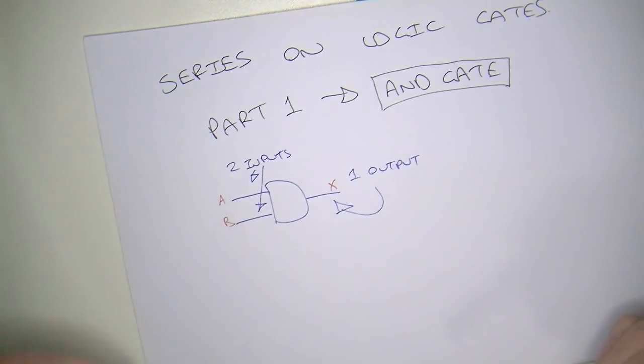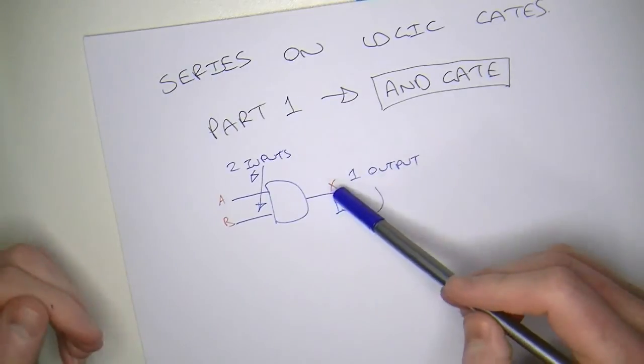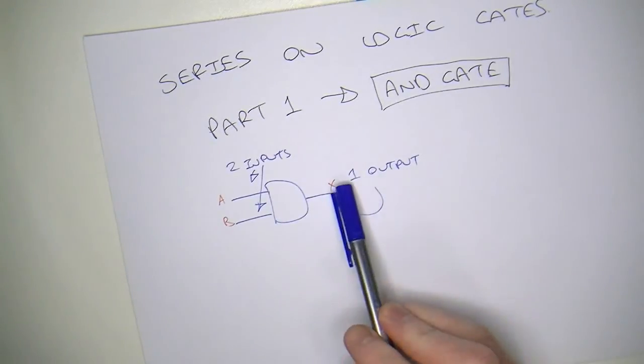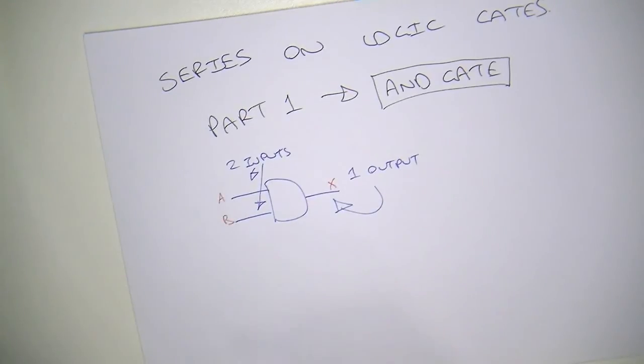Now, when working with logic gates, we're looking at using binary numbers. So, on each one of these inputs, we can put a zero or a one. On the output, well, that could be a zero or a one. And the output is dependent upon what's going on with the inputs.